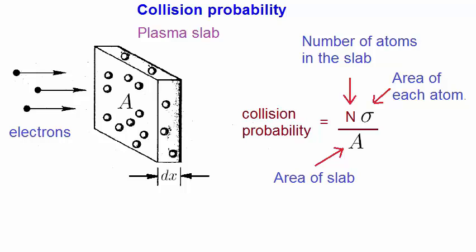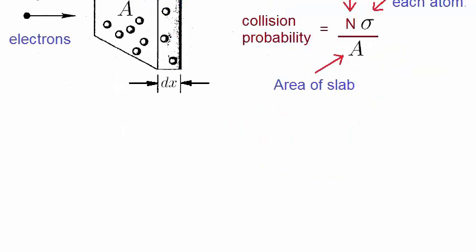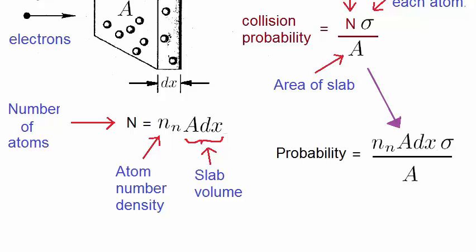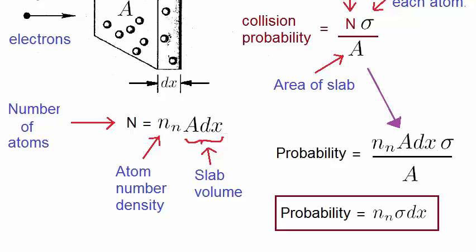So this is the ratio of the area taken up by the atoms divided by the total area of the slab. You can view this as also being the fraction of atoms that undergo a collision. We now need to work out an expression for the number of atoms in the slab. This is given by the number density of the atoms multiplied by the volume of the slab. If we now substitute n back into the expression for the probability, we obtain this. We can cancel out A, and so the whole expression simplifies to this. Note that although this is the probability of the slab, it is really the probability of an infinitesimally thin slab. We'll see shortly how to handle a much thicker slab.